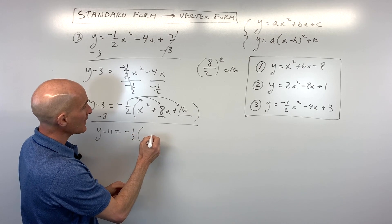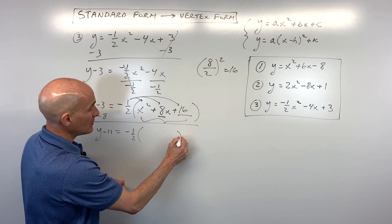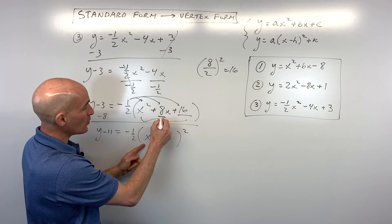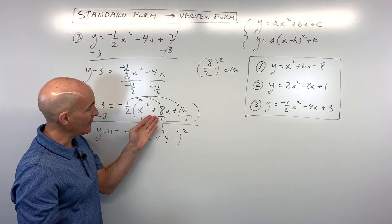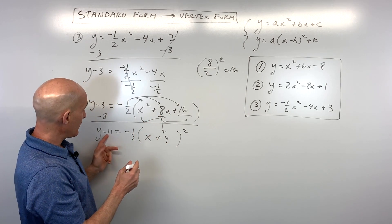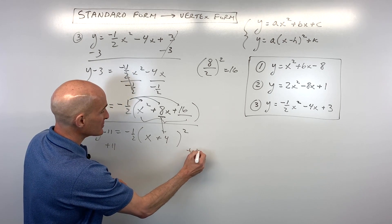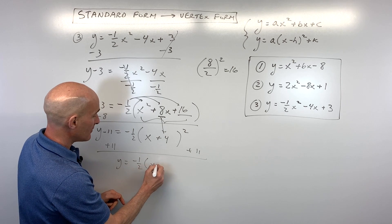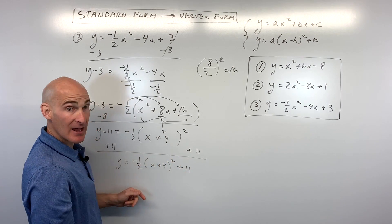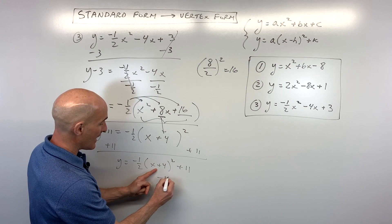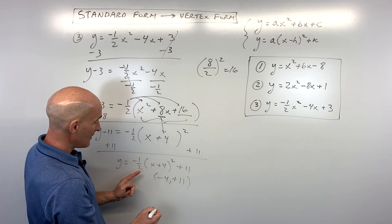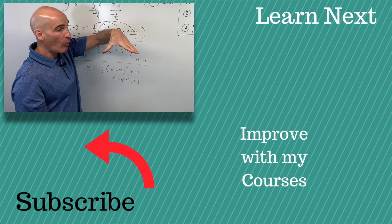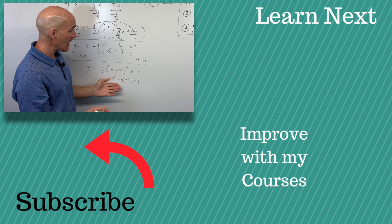We just want to change the form. Because this is a perfect square trinomial, factor it to x plus 4, the quantity squared — always half of the middle coefficient. If it were negative 8x, it would be negative 4. Add 11 to both sides to get y by itself: y equals negative one-half times x plus 4 squared, plus 11. The vertex is at (−4, 11). The a value is negative so it opens down, and the one-half makes the graph wider — a vertical compression.